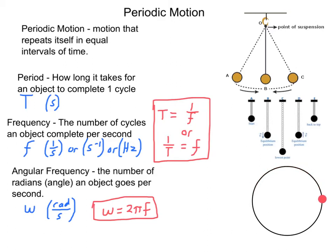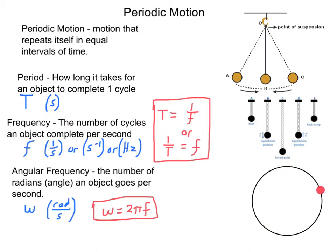So far, everything that we've been learning in this class has been about motion that is continuing in a straight line — maybe turning a little bit, but generally straight, slowing down or speeding up, not something that repeats itself. Now we're going to launch into a section dealing with motion that repeats itself. Specifically, we're launching into periodic motion, which is motion that repeats itself in an equal interval of time.